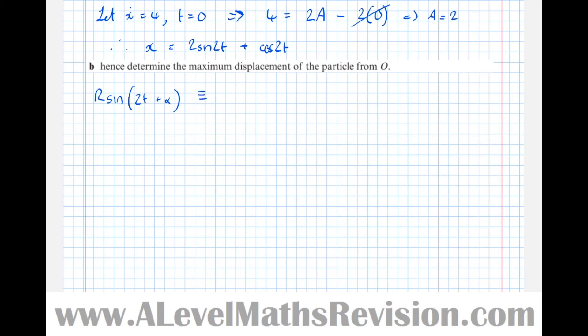That's identical to if we expand it using the compound angle formula in the formula book: we get r sine 2t cos alpha plus r cos 2t sine alpha. Copying our original expression for x, we can see that the number in front of sine 2t is 2, so r cos alpha equals 2. Similarly, the number in front of cos of 2t is 1, so r sine alpha equals 1.